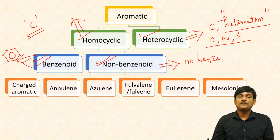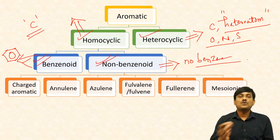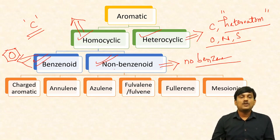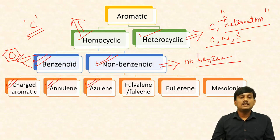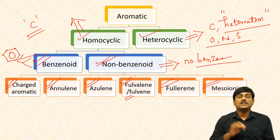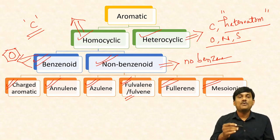In case of non-benzenoid aromatic compounds, there is no benzene ring, but these are aromatic. Again, non-benzenoid aromatic compounds are classified into charged aromatic compounds, annulenes, azulene, fulvene and fulvenes, fullerenes, and mesoionic compounds. These are some non-benzenoid aromatic compounds.